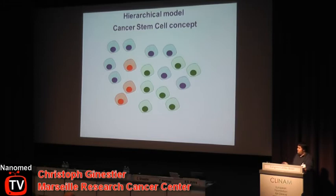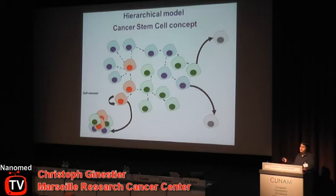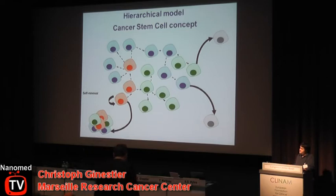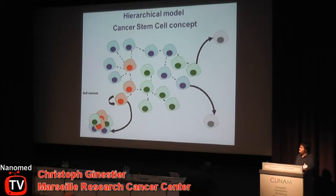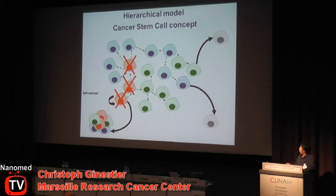Another hypothesis would be that not all the cells are equally tumorigenic — some cells are tumorigenic and some cells are not. If that is the case, the tumorigenic cell population has to generate all the non-tumorigenic cells of the bulk tumor, and it also has to self-renew to keep the tumorigenic activity in the tumor bulk. If this hypothesis is true, you want to specifically target the tumorigenic cancer cell population to achieve a cure of cancer.